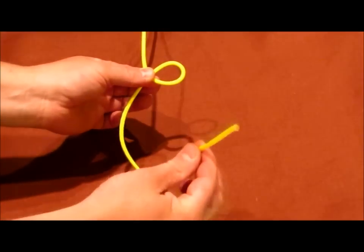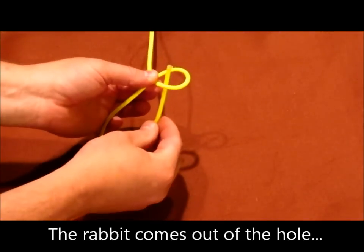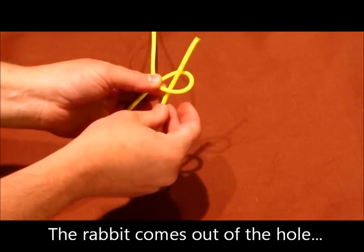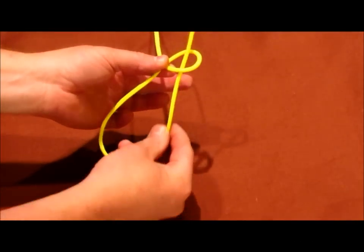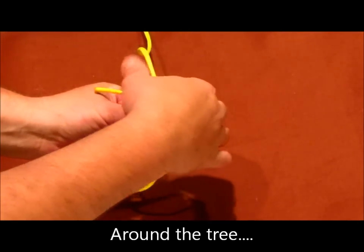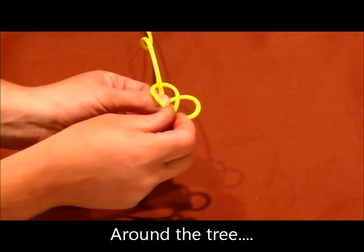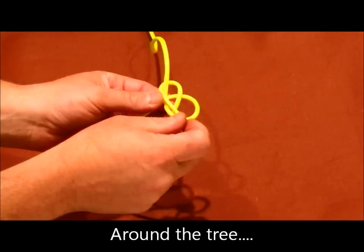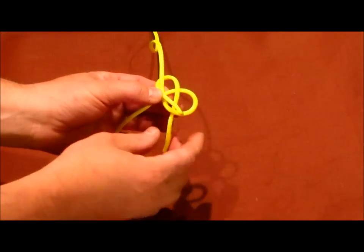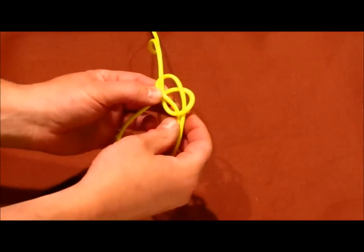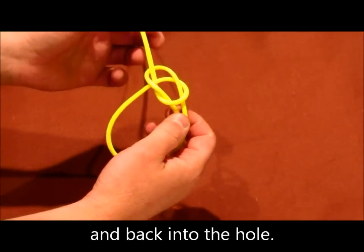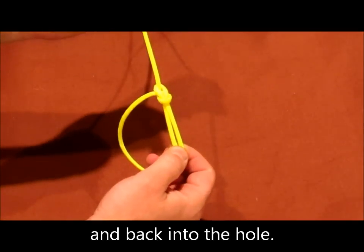Then we're going to take the end, and we're going to run it up through the bottom of our rope, just like so. Run it up through the bottom. We're going to take this, and we're going to run behind our other standing line, the longer line. Right now it kind of looks like a pretzel. And then you're going to pull this right down, right next to it, and pull.